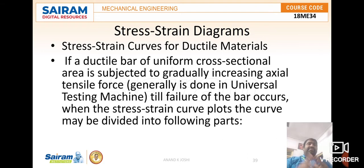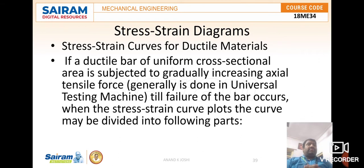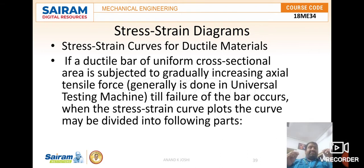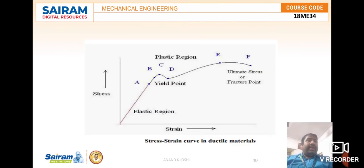Now we will discuss the stress-strain diagram for different materials — ductile and brittle materials. For stress-strain curves of ductile materials, suppose you take a ductile bar of uniform cross-sectional area subjected to a gradually increasing axial tensile force. Generally this is done in universal testing machines until failure of the bar occurs, and the resulting stress-strain curve may be divided into two parts, which we will discuss in the next slide.